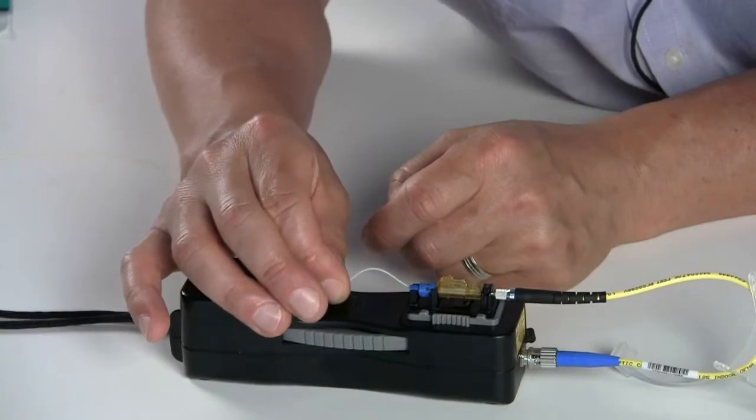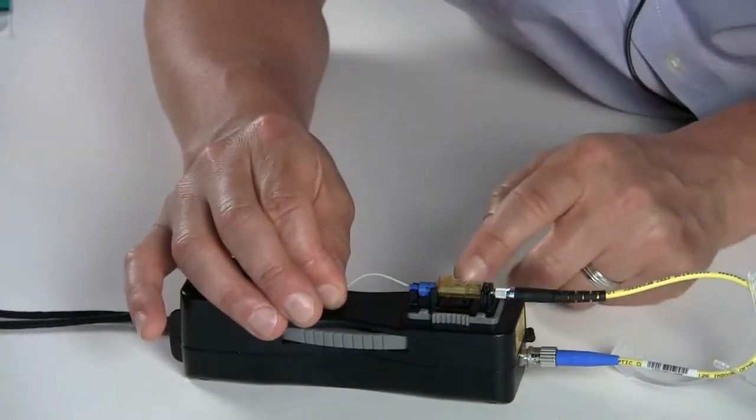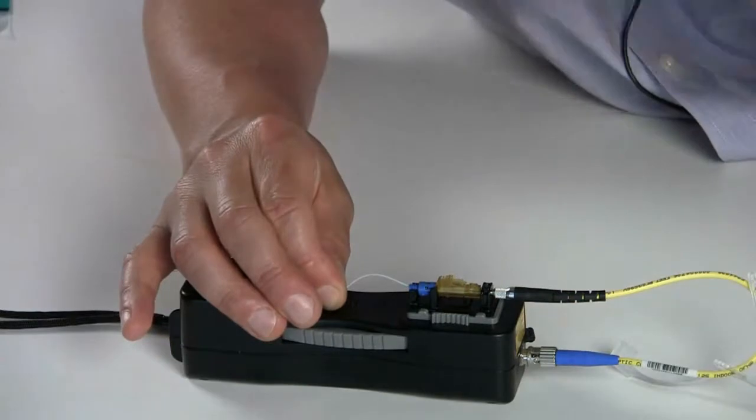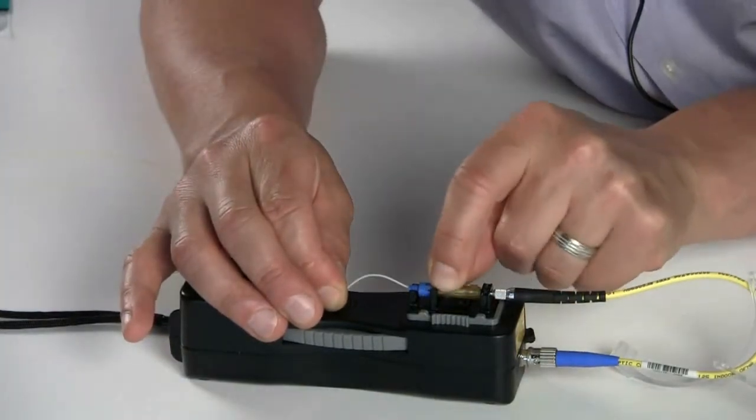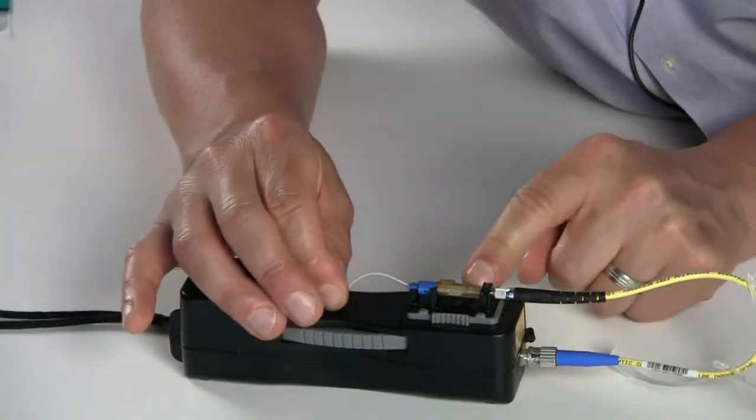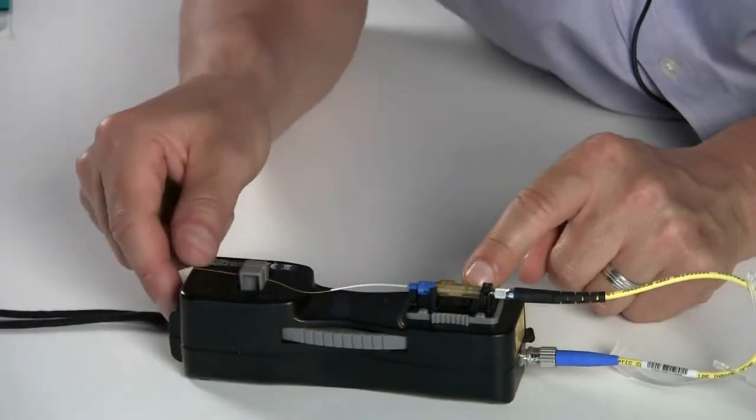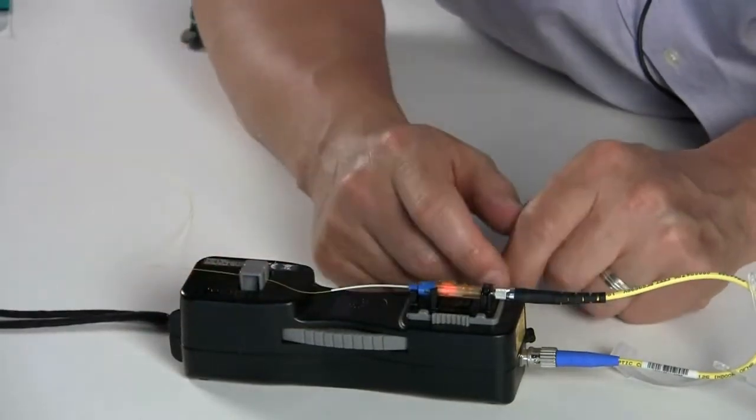Bottom out the buildup tube. Put pressure at the base of the buildup tube and the fiber to create a little bow in the buildup tube. Re-cam the fiber. And turn on the VFL.